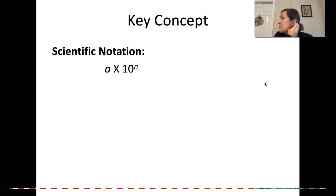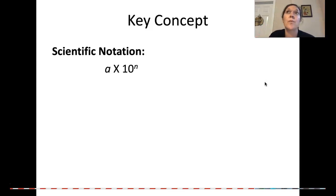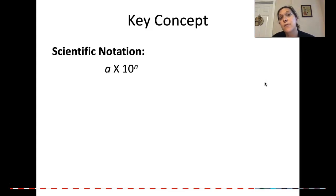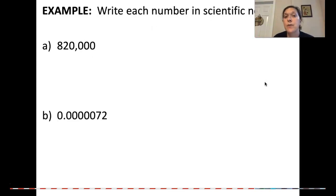Now let's get into scientific notation. Scientific notation is where you have a single integer being multiplied by a power of 10. You can't have a double digit or triple digit times the power of 10 — it needs to be a single digit: a times 10 to some power of n.